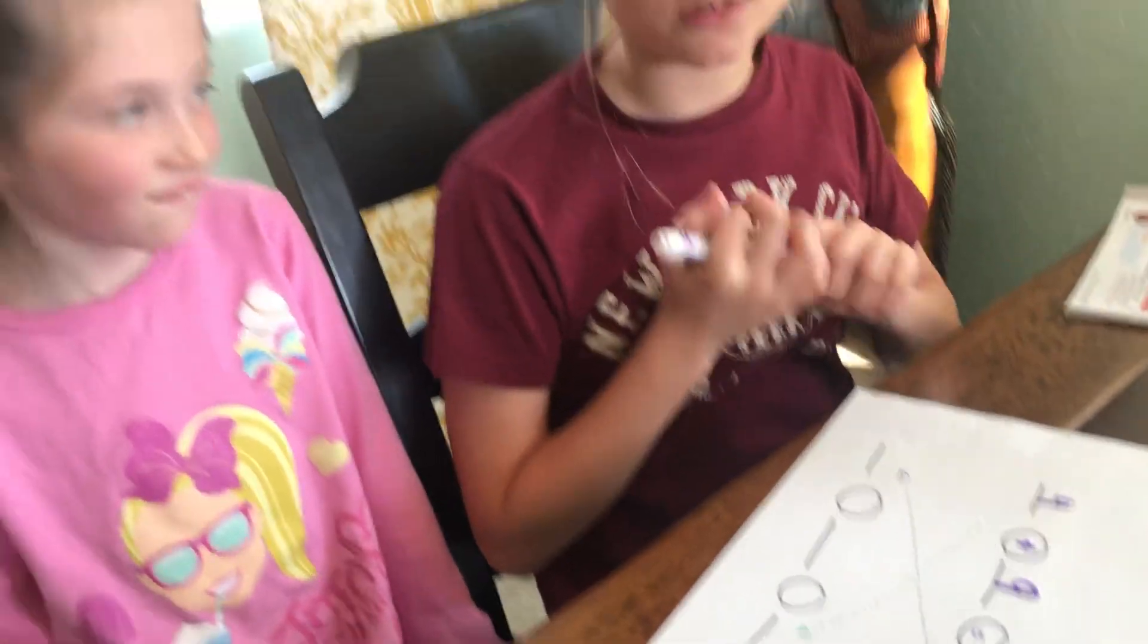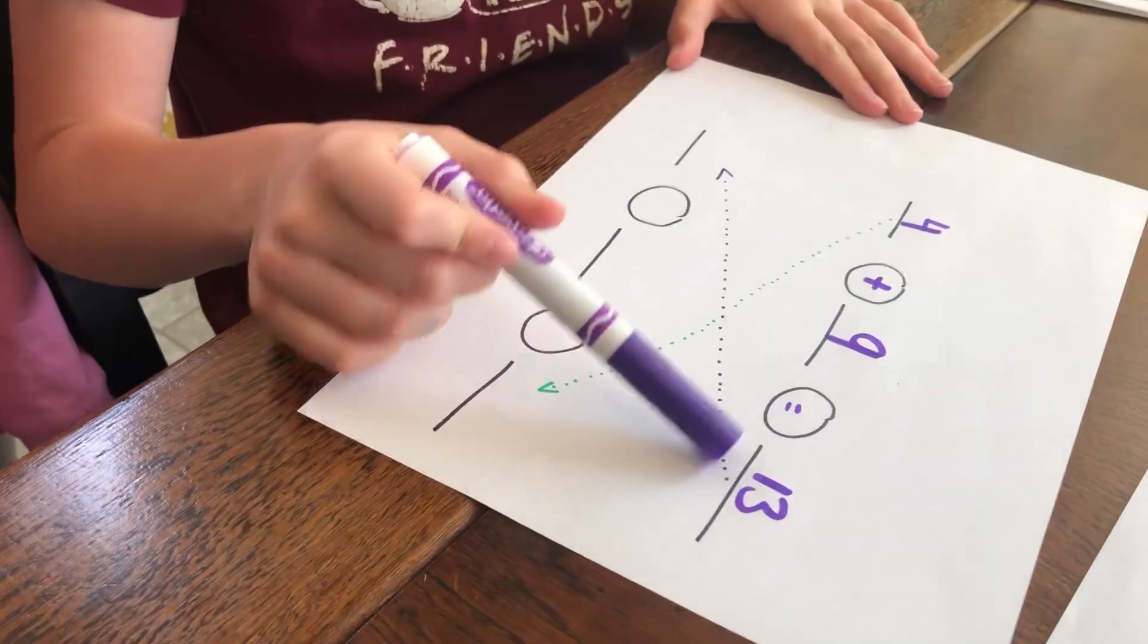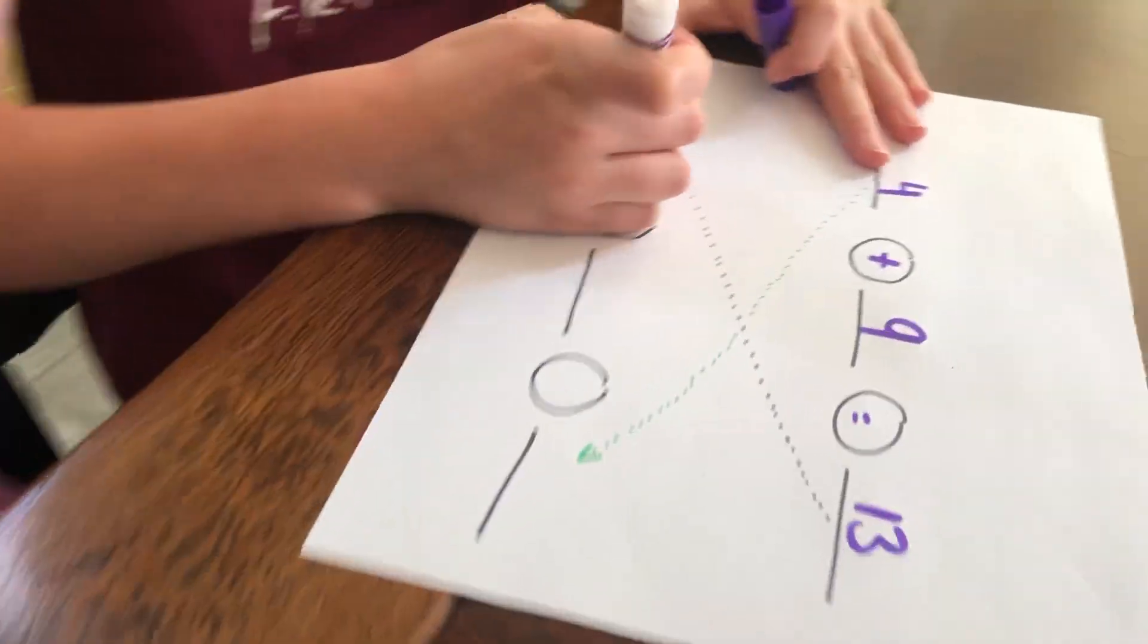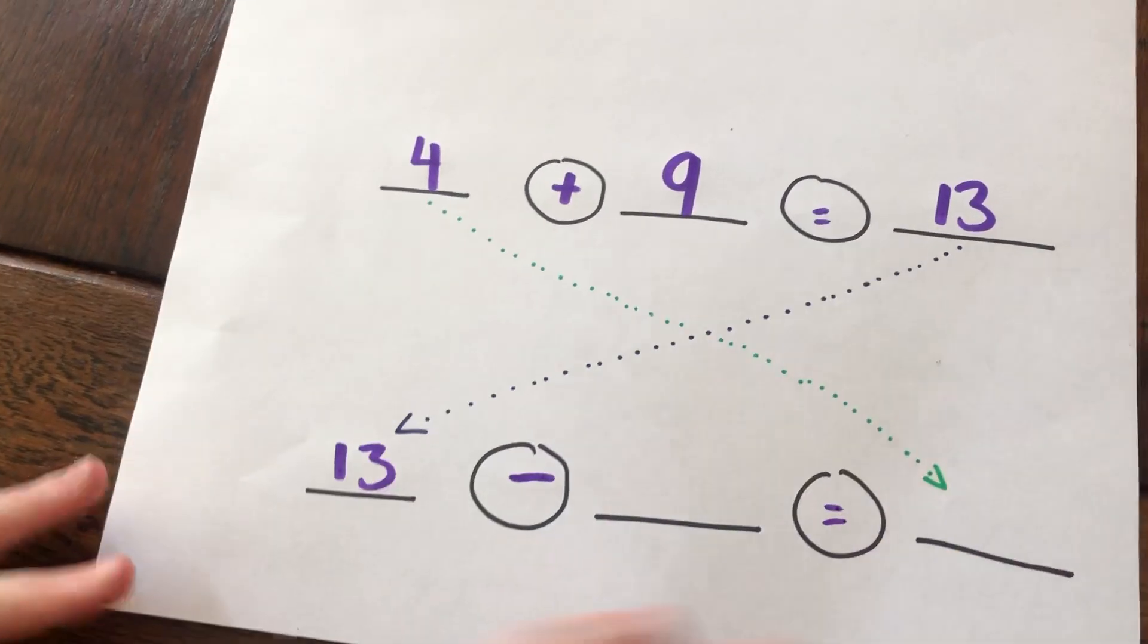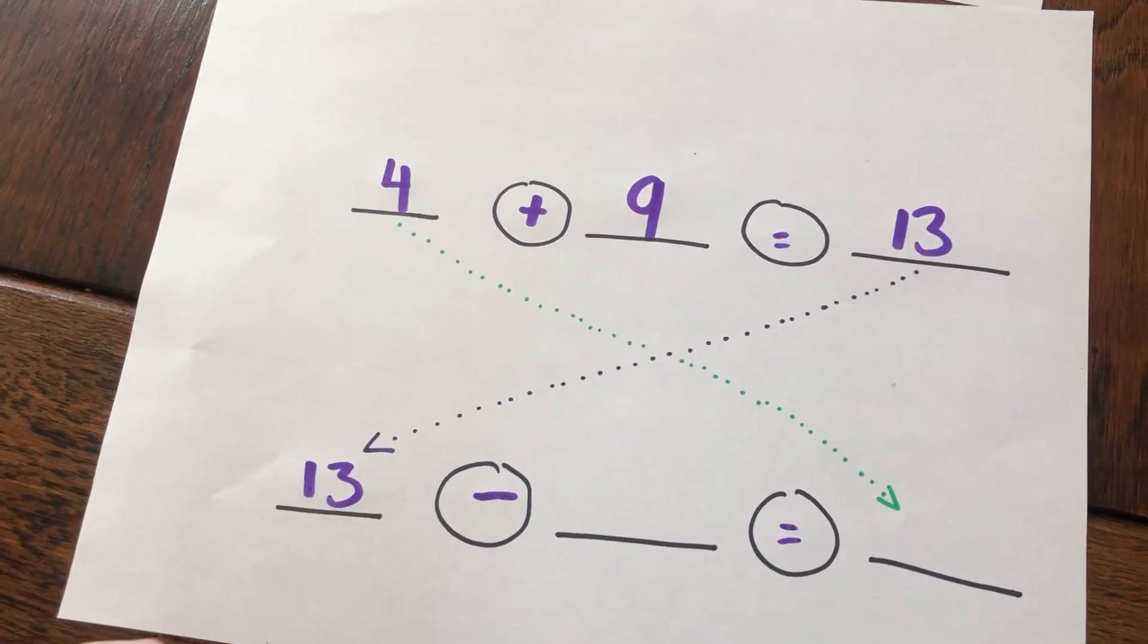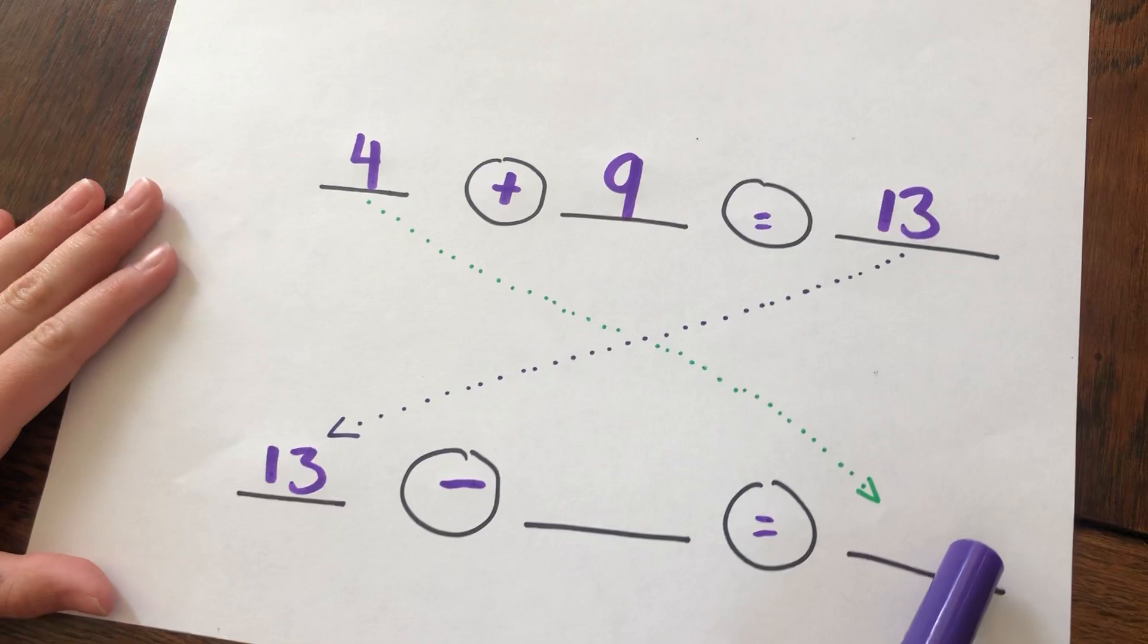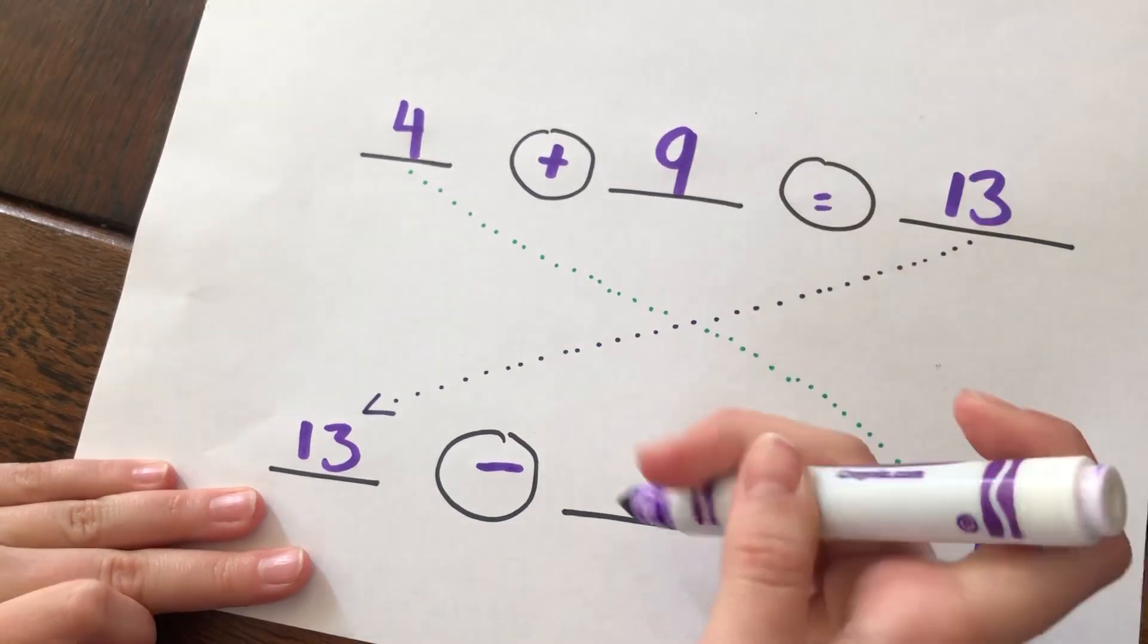Then it said to do an equal subtraction problem. So if you look here at these dots, 13, well, we know that the biggest number always goes in front when you're doing subtraction, so let's put it there. And we know it's subtraction, so we're going to put our subtraction and our equal sign there. Now, if we look at the 4 right here, you can see the dots go all the way to the end because it's the smallest number. So then you're going to put that there. And then your 9 goes in the middle.